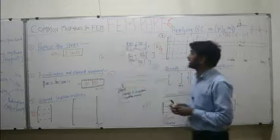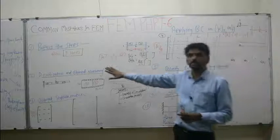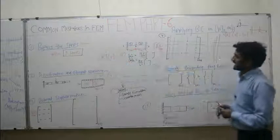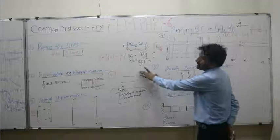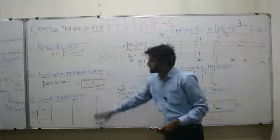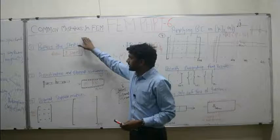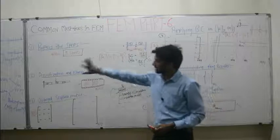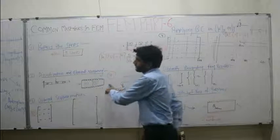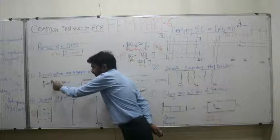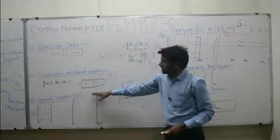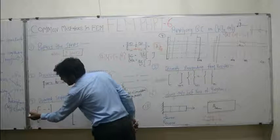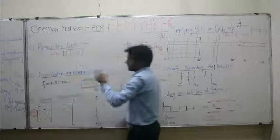In summary, these are the 6 common mistakes which around 50% of students in a class of 190 make — either one or more of them. The solutions are: for bypassing steps, follow all 9 steps; for discretization error, use at least 4 elements for heat transfer and always place a node at the point of force application; for distorted stiffness matrix error, always multiply the constant EI/L³ with each element of the local stiffness matrix before exporting to the global stiffness matrix.